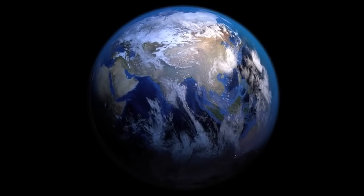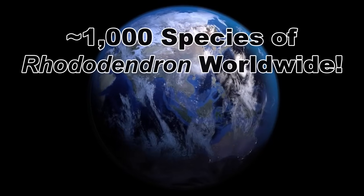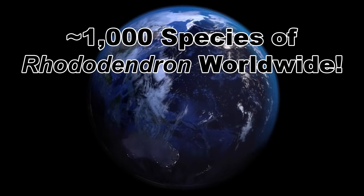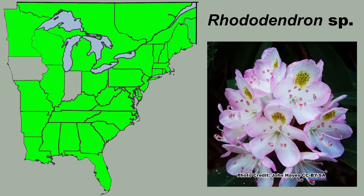The genus Rhododendron is large and varied, with around 1,000 species worldwide and a wide distribution in eastern North America, with a few species being native to the west. I wanted to get this taxonomy out of the way early because it is the reason for much of the confusion between azaleas and rhododendrons.